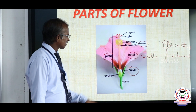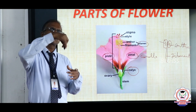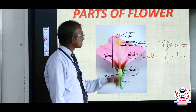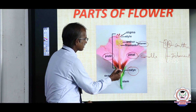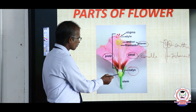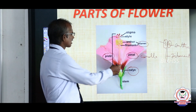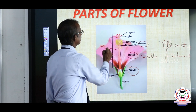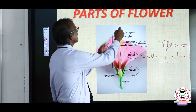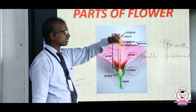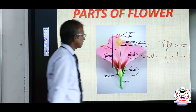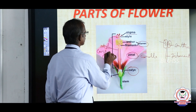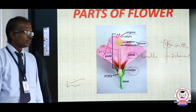Next is the pistil. The pistil is the female part of the flower and is the centre or innermost whorl. The pistil consists of, at the base, a swollen structure called the ovary, which continues to form a long tube called the style. At the end it has a knob-like structure called the stigma. Pistil is otherwise called carpel — the female part of the flower.